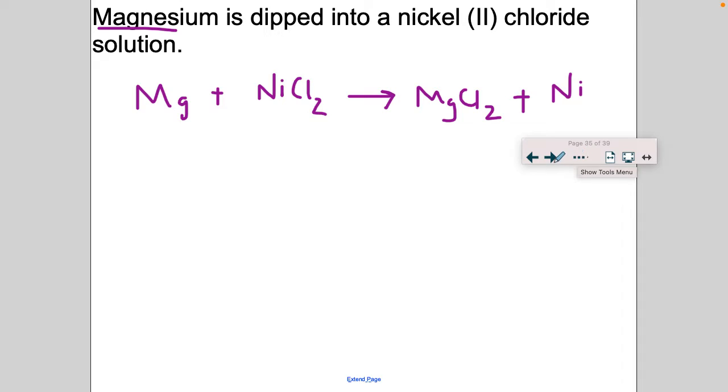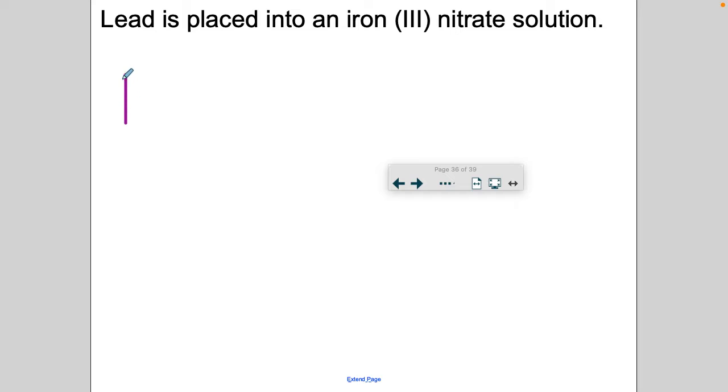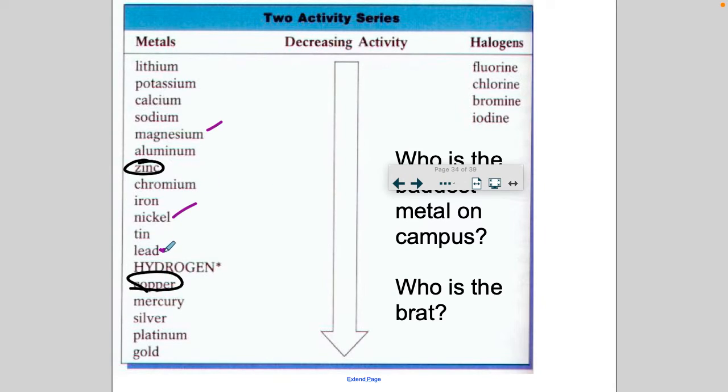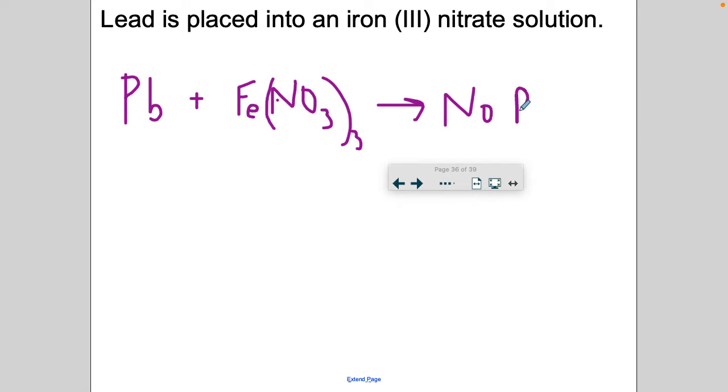Let's do another example. We got lead, which is Pb, placed in an iron 3 nitrate solution. Nitrate is NO3. I'll double check. It's NO3 minus one. So put the NO3 in parentheses and a little three there. Okay, so we got lead and iron. I'm going to go back and find lead, right here, and iron. So is lead going to cut in? No. So then you write no reaction. Lead is too low on the list. It can't cut in. Iron's the bigger, badder metal.